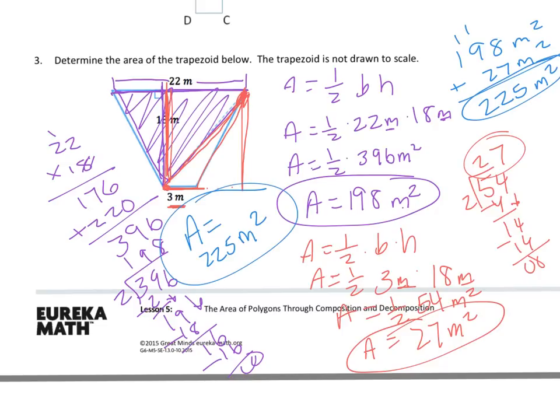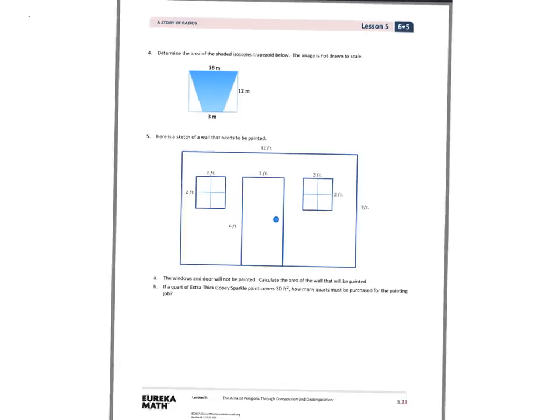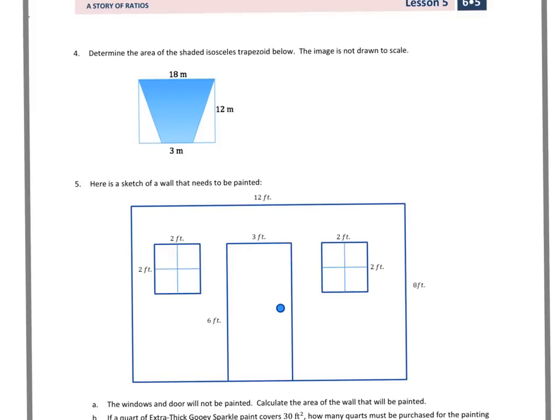Let's take a quick look at page 2. Now, with this, we have to determine the area of the shaded isosceles trapezoid below. And that's going to be finding a couple different pieces and then subtracting out.